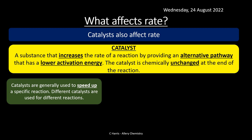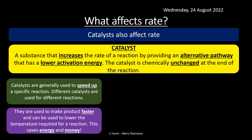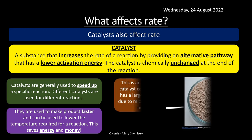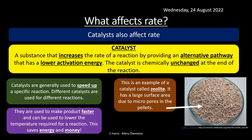Catalysts are generally used to speed up specific reactions, and different catalysts are used for different reactions. They make a product faster and can lower the temperature required for a reaction, which saves money, energy, and time in industry — reducing energy costs overall. An example is zeolite: tiny pellets with micropores, each of which can help catalyze a reaction.